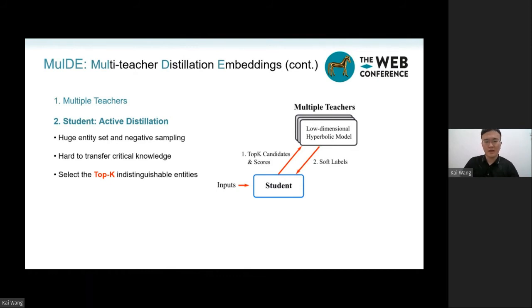the negative sampling hardly hits the indistinguishable entities in the huge entity set, such that critical knowledge owned by teachers is difficult to pass on to the student model in the conventional way. Therefore, in this paper, we design a novel active distillation strategy for KGE.